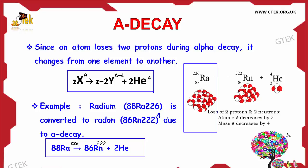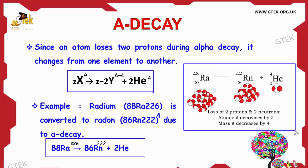The structural representation shows Radium being converted to Radon with the emission of an Alpha particle. Here the loss of two protons and two neutrons takes place, hence the atomic number decreases by 2 and the mass number decreases by 4.